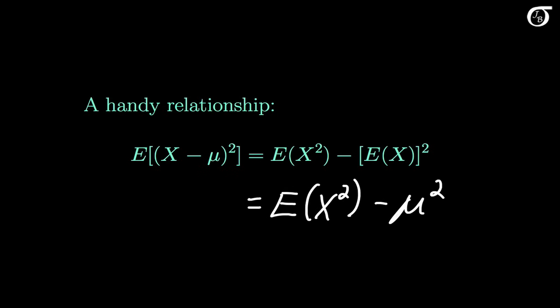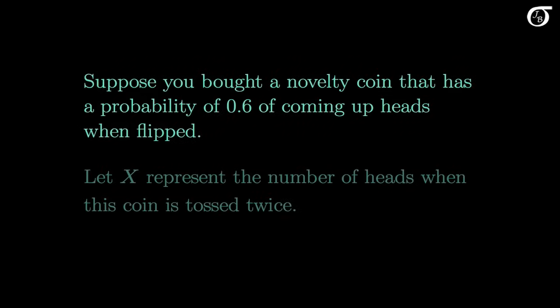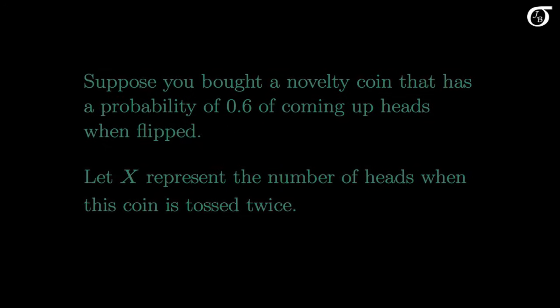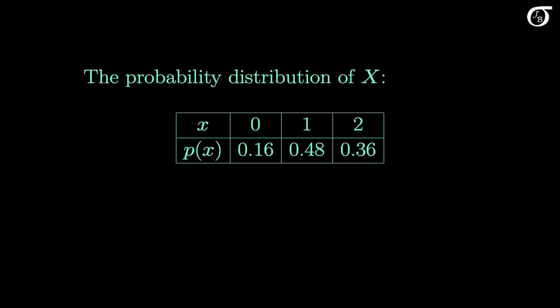Let's calculate these quantities for an example. Suppose you bought a novelty coin that has a probability of 0.6 of coming up heads when flipped. Let X represent the number of heads when this coin is tossed twice. Here's the probability distribution of X — it's the same one shown at the start of this video. If you don't know where this comes from, it was worked out in the introduction to discrete random variables video.